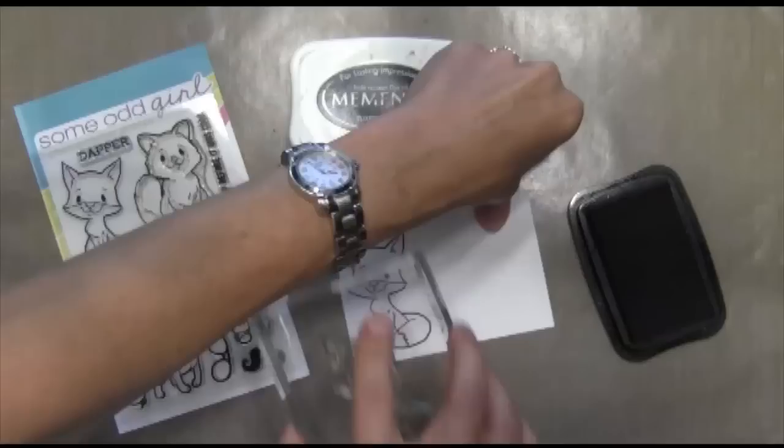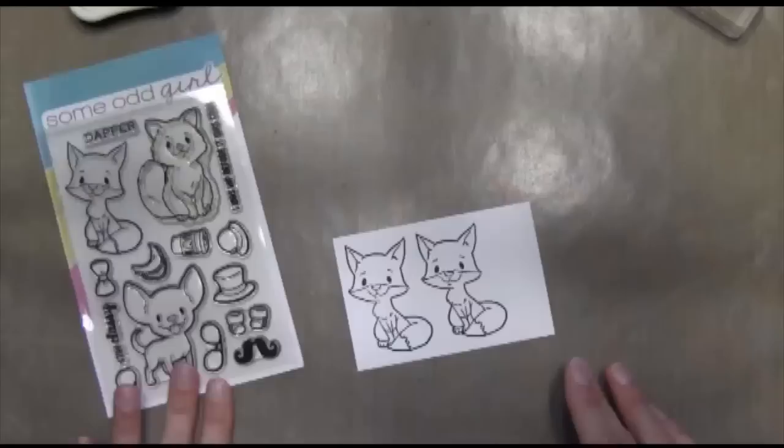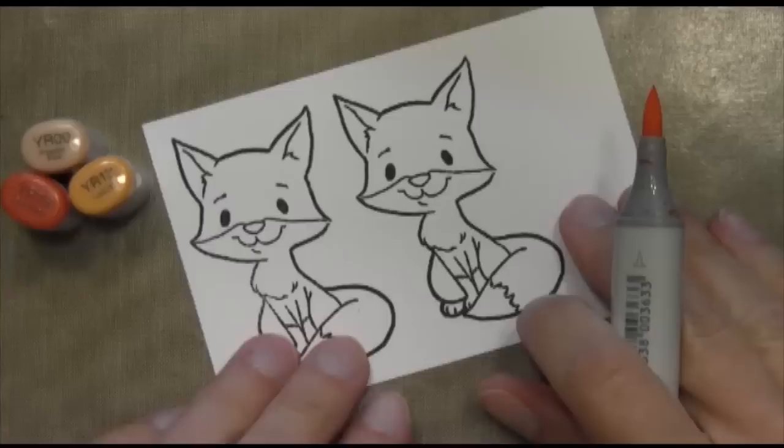Now I'm going to work on my fox. I'm using Memento Tuxedo Black ink because I'm going to be using Copics. Sometimes when I stamp the first time using Memento, it doesn't come out that great, but then as soon as I stamp it again, it comes out great. So I ended up stamping it twice.